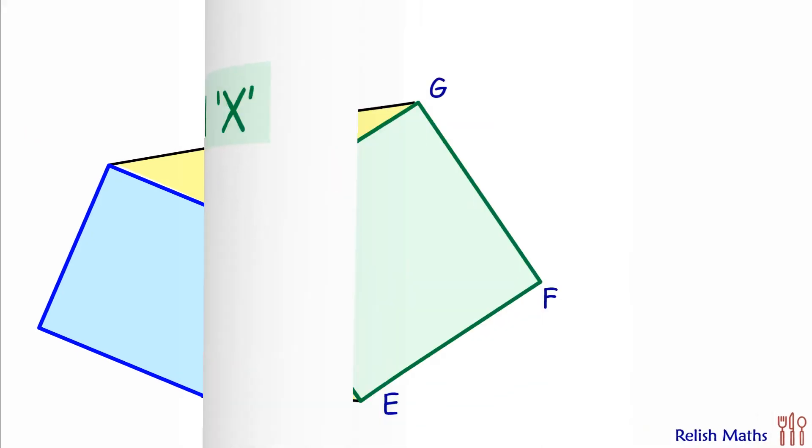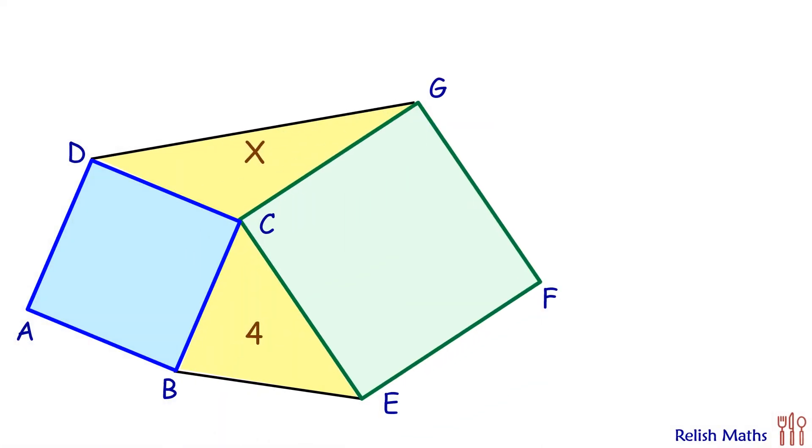We'll discuss the solution in two ways: one using trigonometry and another for those who are not well versed with trigonometry. To start, we'll assume the length of the side for this square is a cm and for this square is b cm. Let's assume this angle here